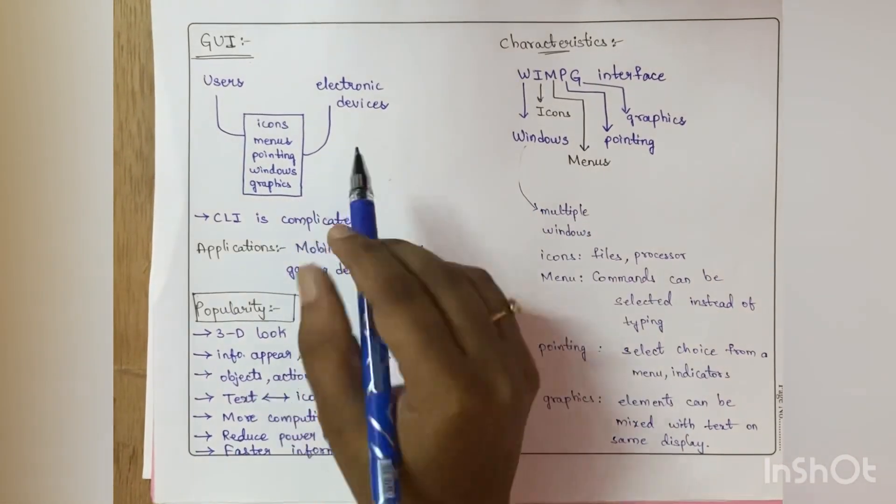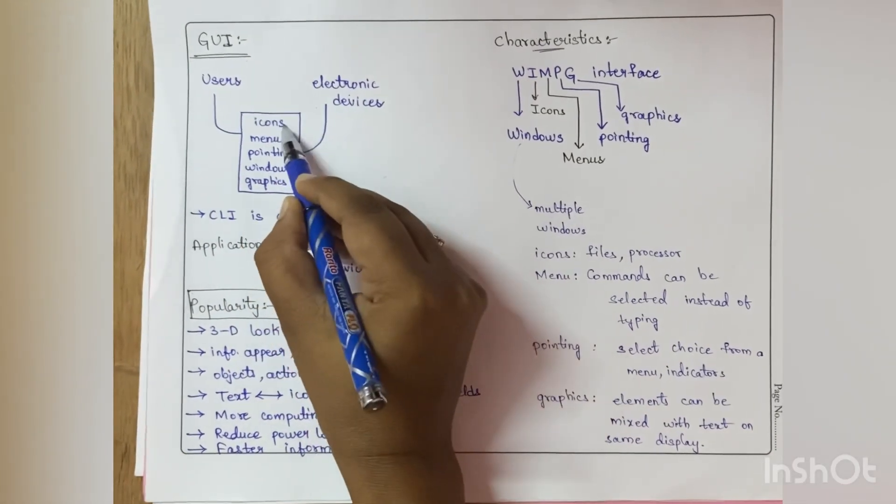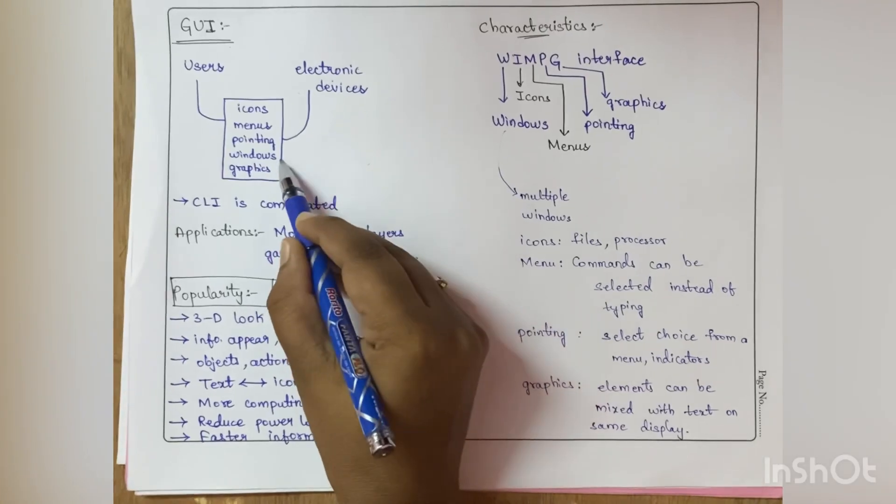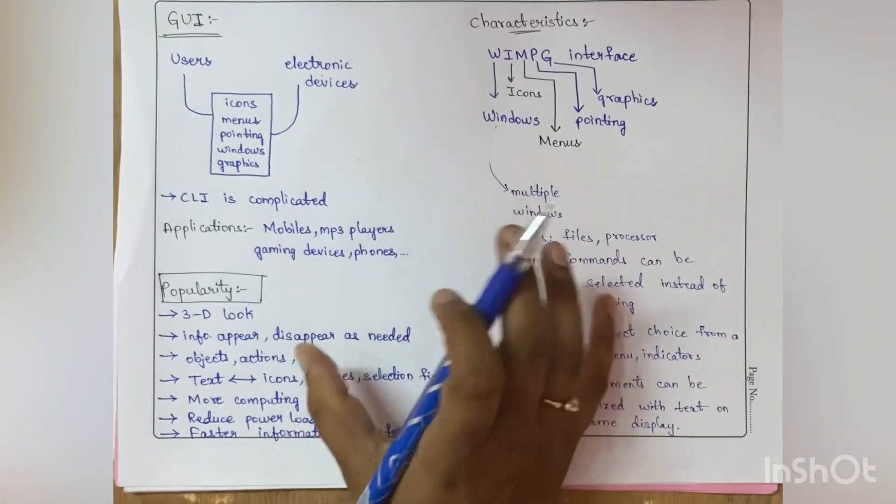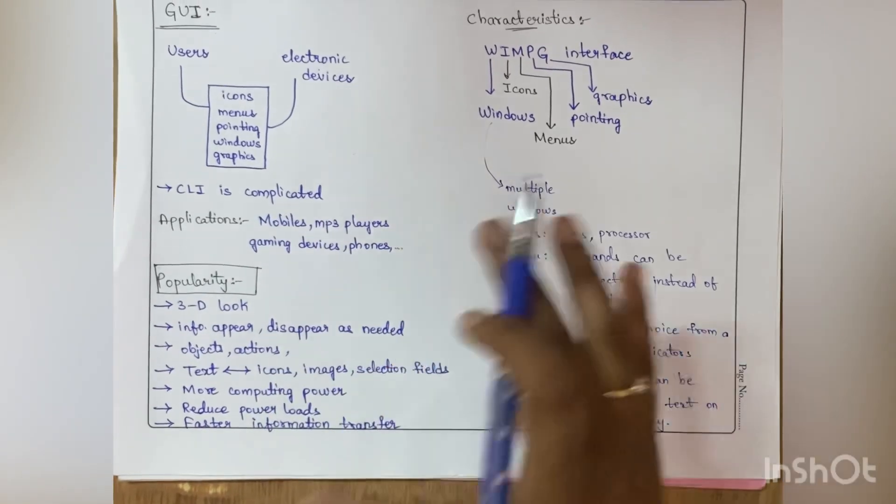It allows users to communicate with electronic devices using icons, menus, pointing devices, windows, or graphic images. Why has this graphical user interface come into the picture?